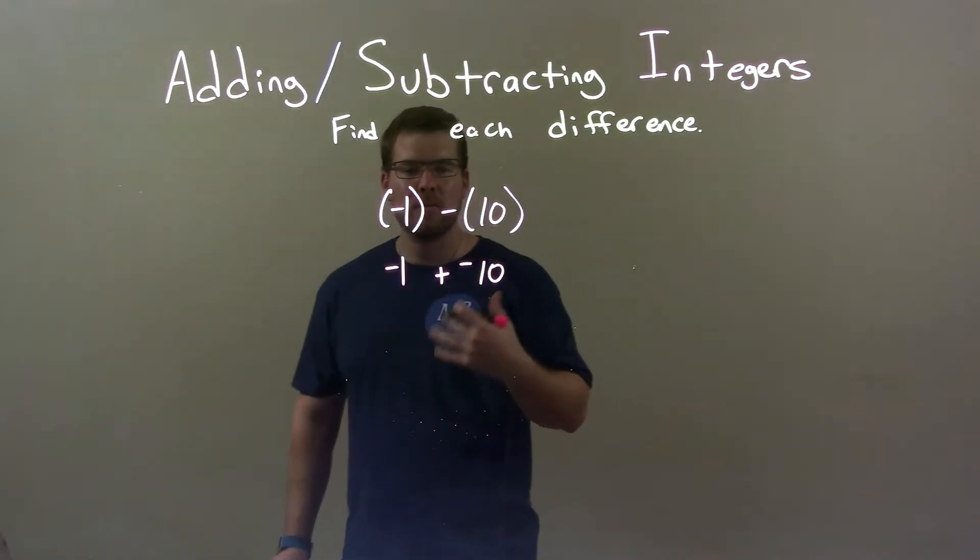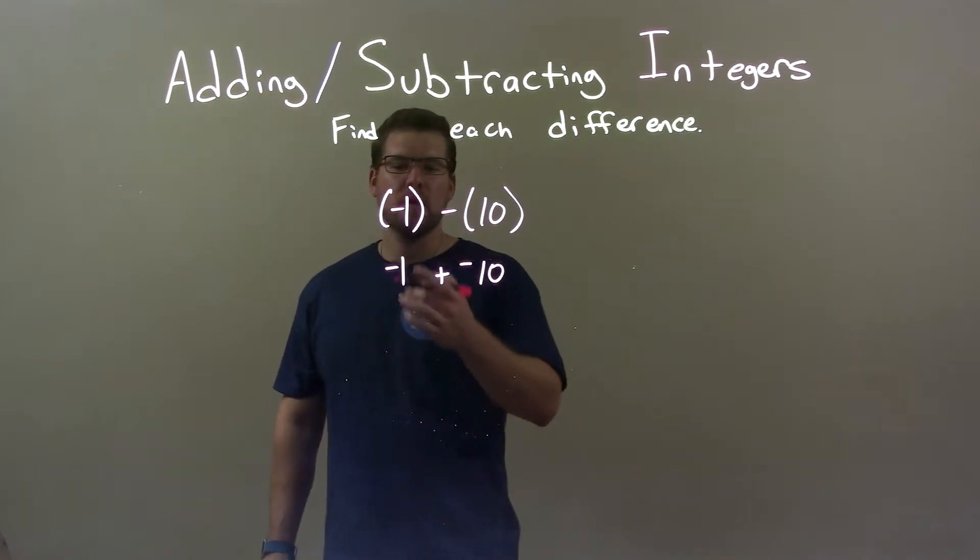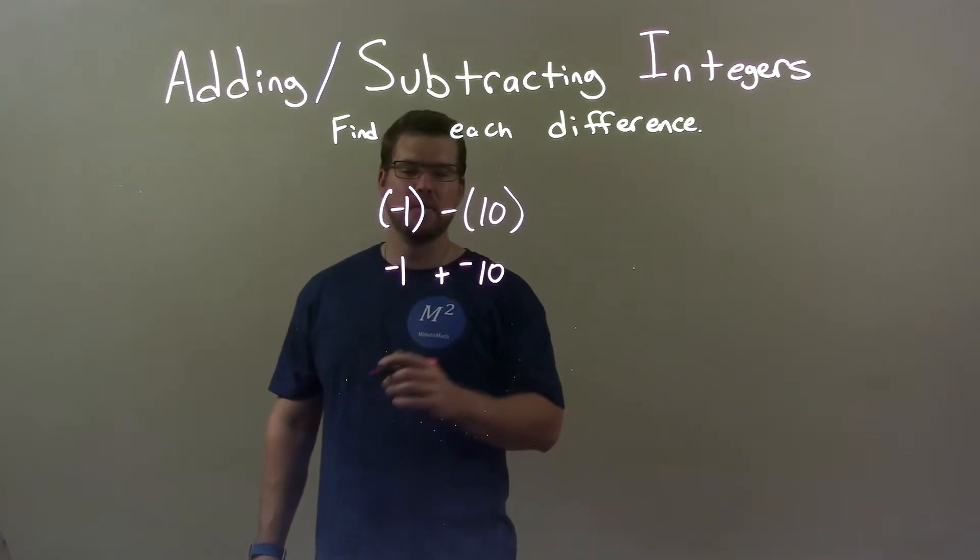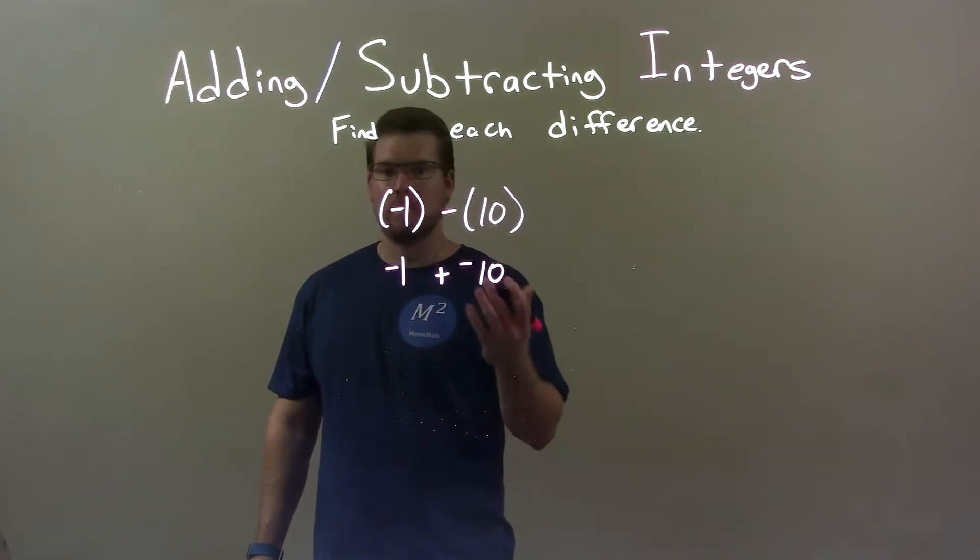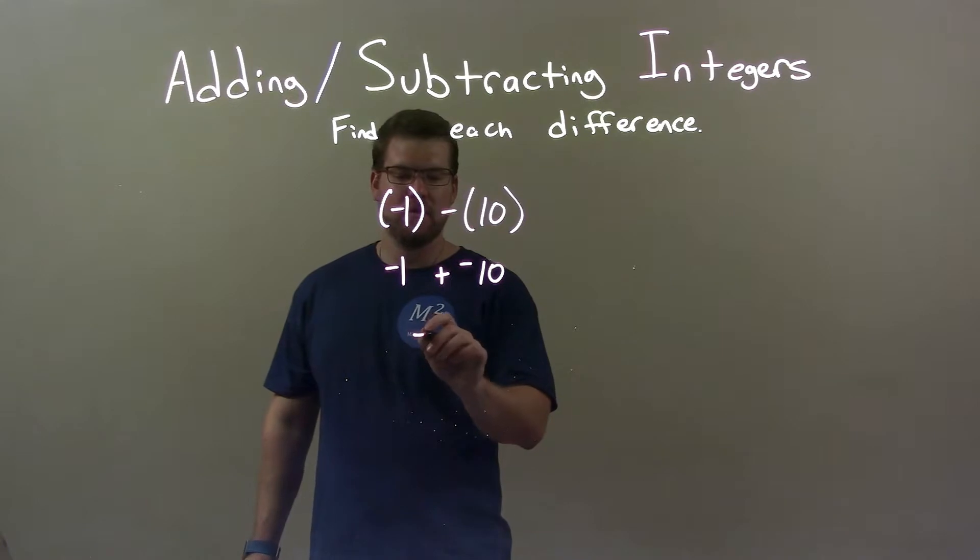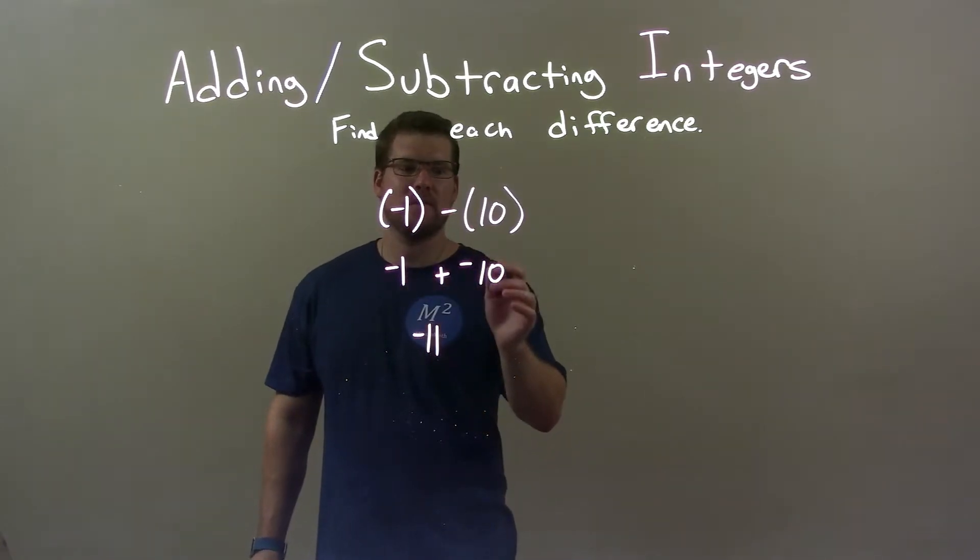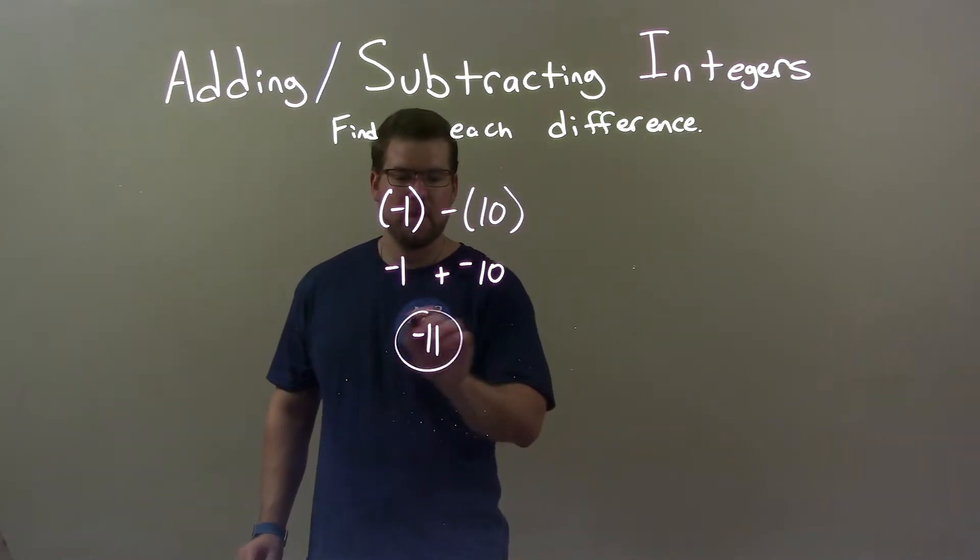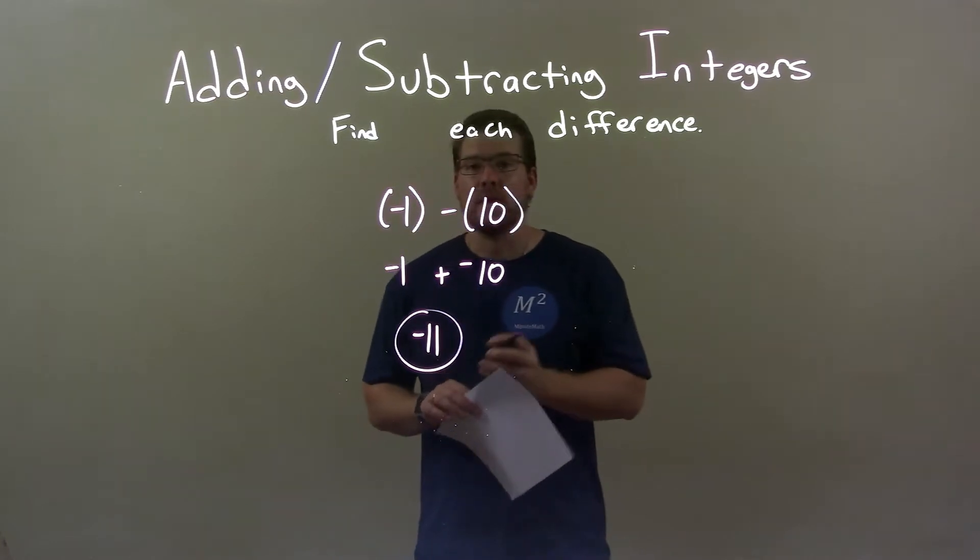And this problem I think is a little easier to solve. So negative 1 plus a negative 10 - we're both going toward that negative direction, they're both the same, both negative. So we have negative 11, right? Negative 1 plus a negative 10 is negative 11. So negative 11's our final answer.